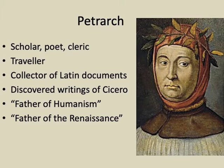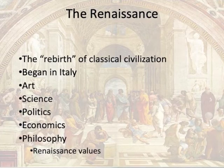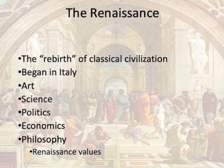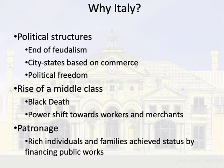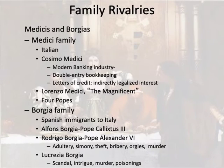The Renaissance covered a wide range of human activity, including art, science, politics, economics, and philosophy. It began in Italy, in Florence, and then spread to the rest of Europe, for a variety of reasons. The end of feudalism and the Black Death had seen the rise of a middle class, and a broad-based market for artistic creations had followed. An unusual degree of political freedom gave space to those pushing the boundaries, and the patronage of competing rich families subsidized the creation of countless works of public art. The most noteworthy of these families were the Medicis and the Borgias.